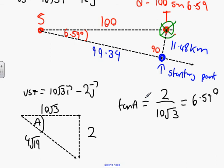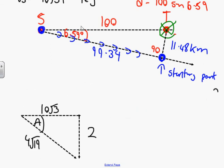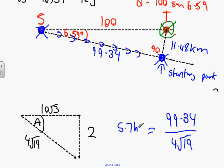What do we say our speed is? 4 root 19. What I want to do is see how long it takes me to go from here to here, so I can start tracking back two hours. 99.34 divided by 4 root 19 gives us 5.7 hours. 5.7 hours is how long it takes to go from here to here.